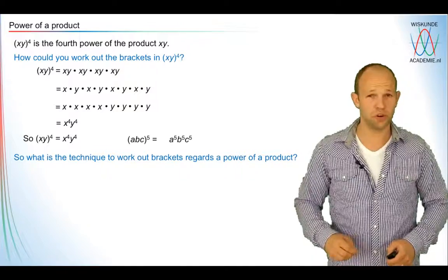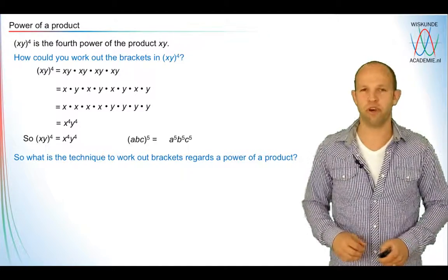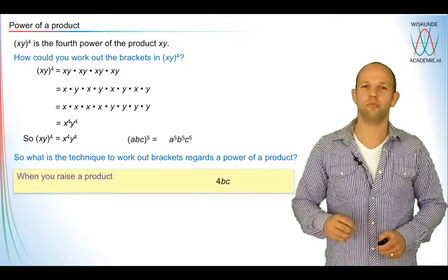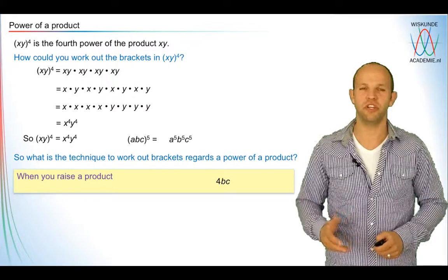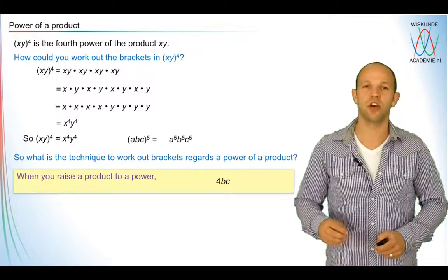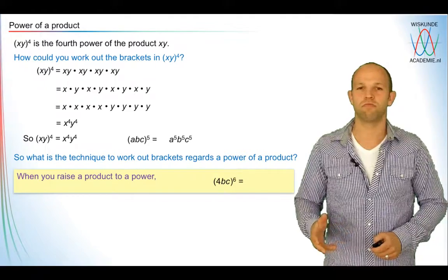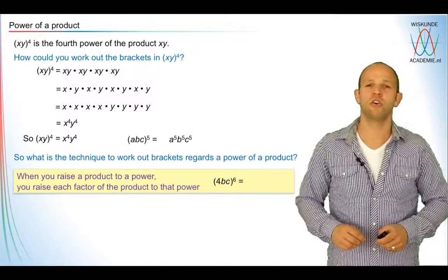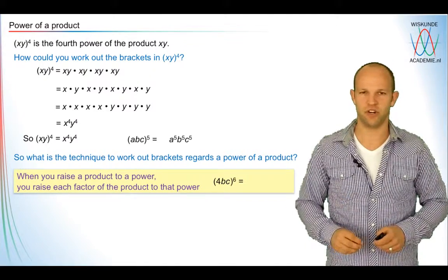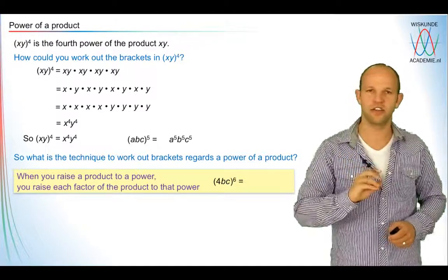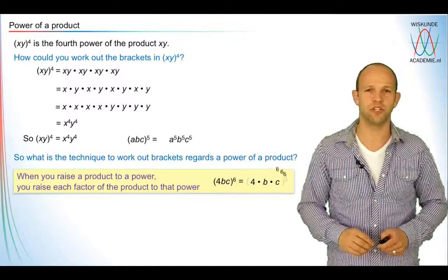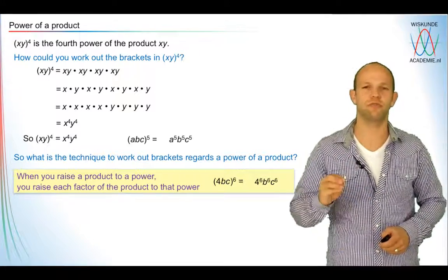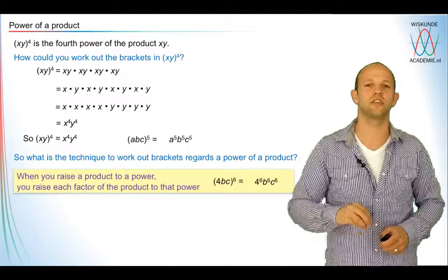So what is the technique to work out brackets for a power of a product? When you raise a product — for example 4bc, meaning 4 times b times c — to a power, say to the power six, you raise each factor of the product to that power. So each factor inside is raised to that power, which means 4bc to the power six gives you 4 to the power six, b to the power six, c to the power six.